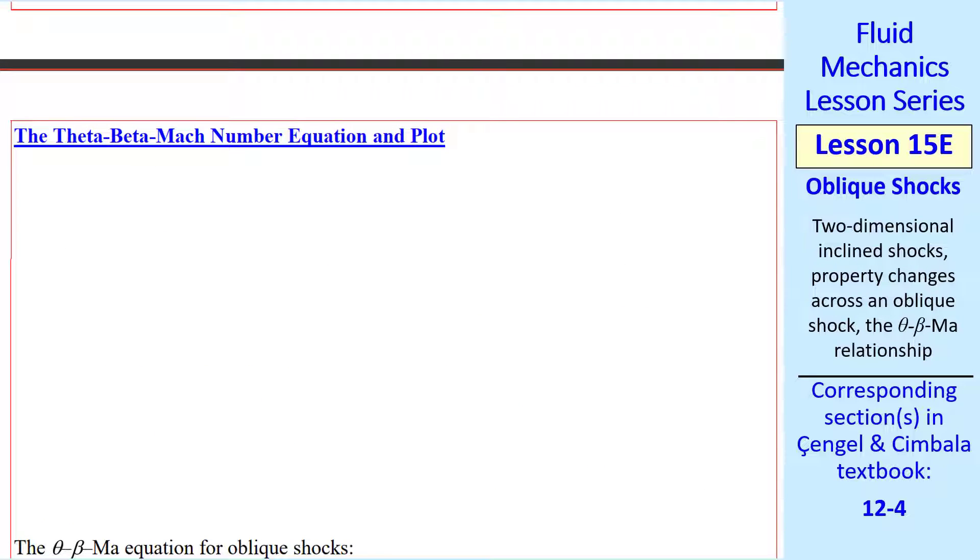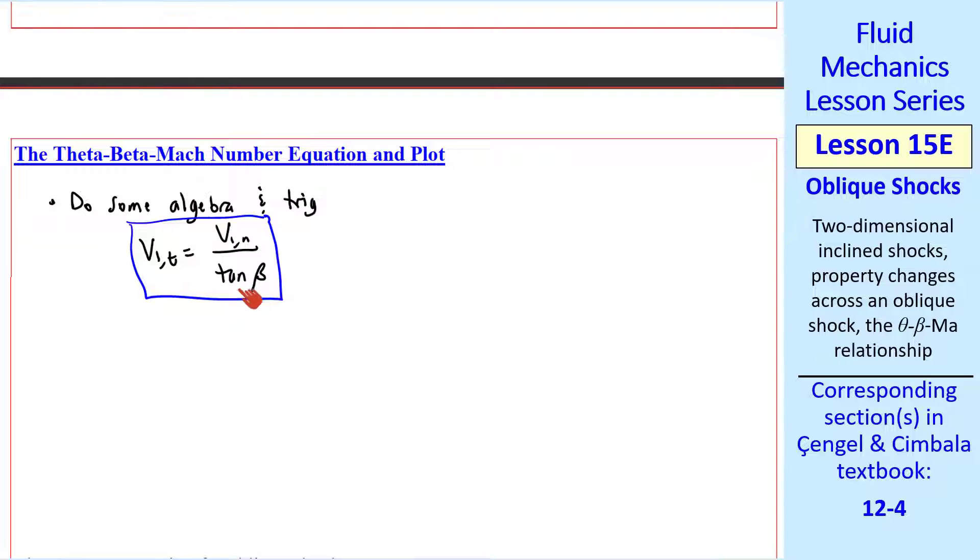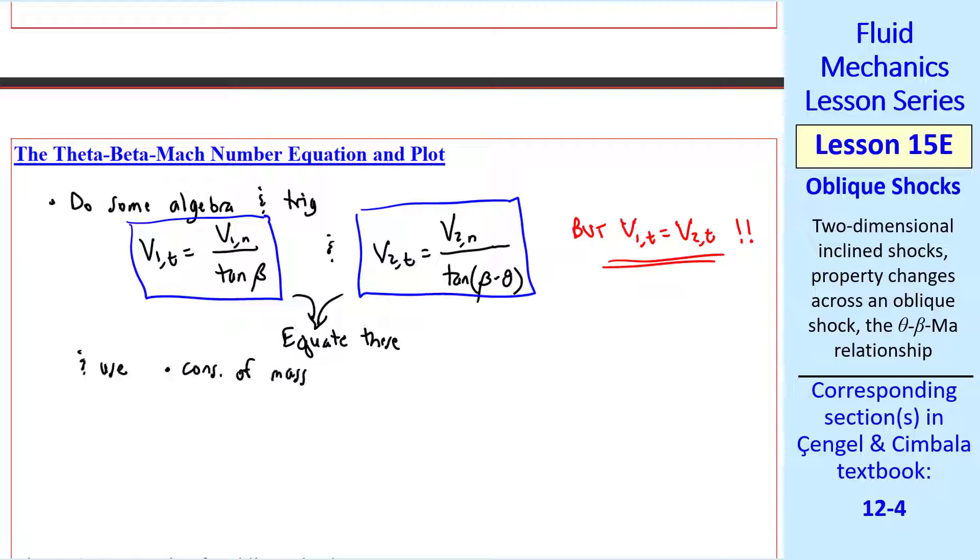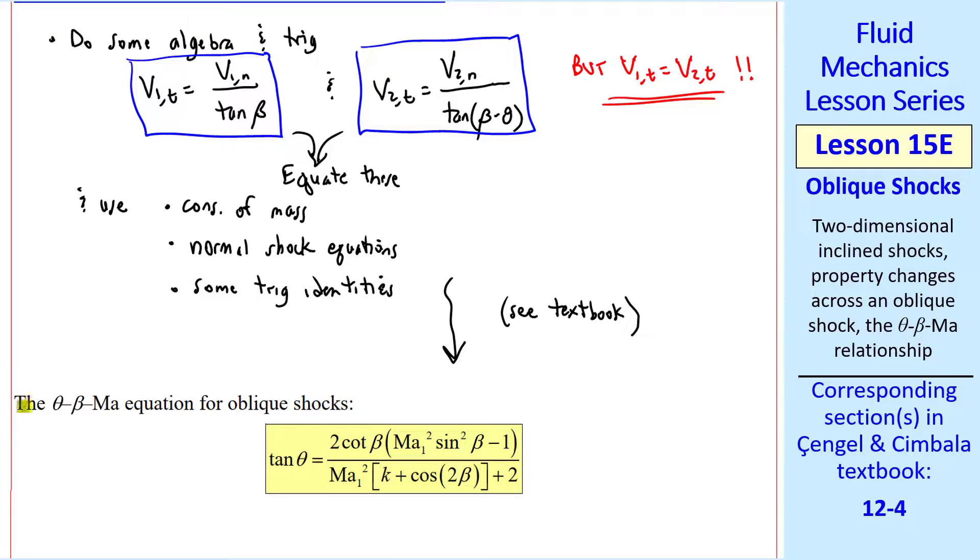Now all that remains is to figure out the relationship between theta, beta, and Mach number. So we do some algebra and trig. Going back to our diagram, tangent beta is V1n over V1t. So V1t is V1n over tangent beta. And similarly, V2t is V2n over tangent beta minus theta. But remember that these two tangential components are equal, so we equate these and also use conservation of mass, some of the normal shock equations, and some trig identities. After all the algebra, which you can find in the textbook, we get this so-called theta, beta, Mach number equation for oblique shocks.